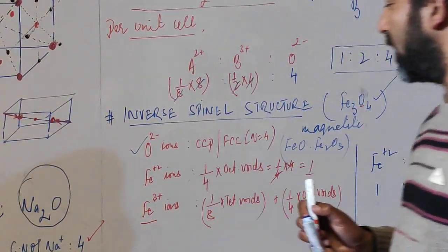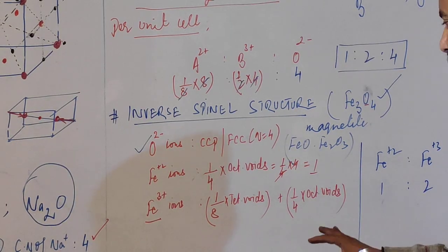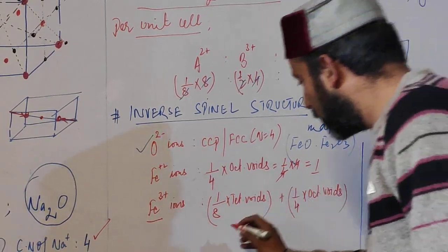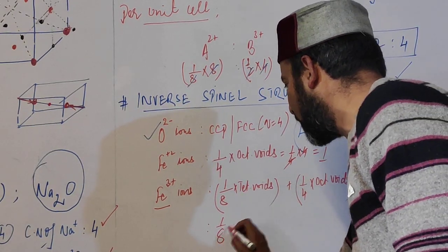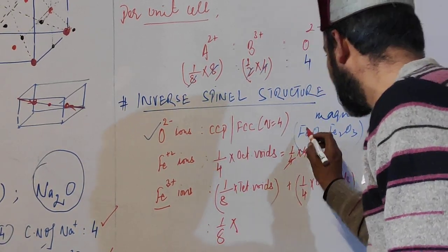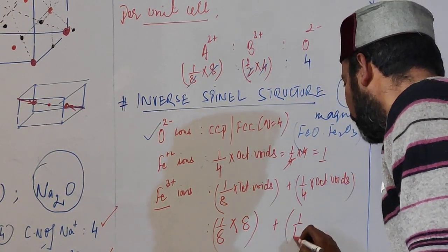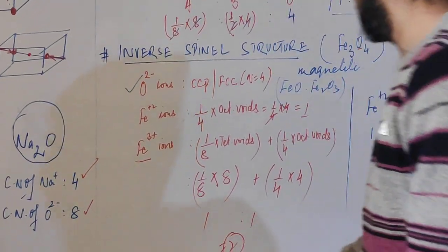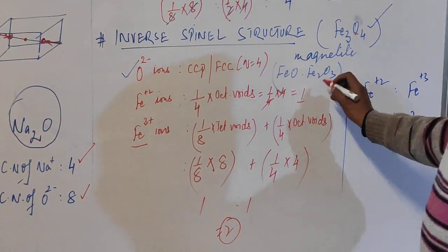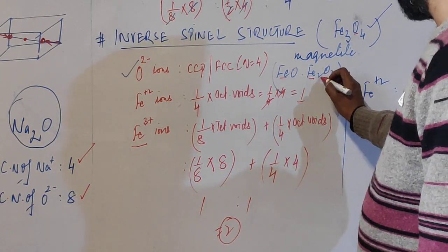There are ferric ions equally distributed between tetrahedral and octahedral voids. They occupy one-eighth of tetrahedral voids plus one-fourth of octahedral voids, which means we have 1 + 1 = 2 ferric ions. So clearly, we have one ferrous and two ferric ions.